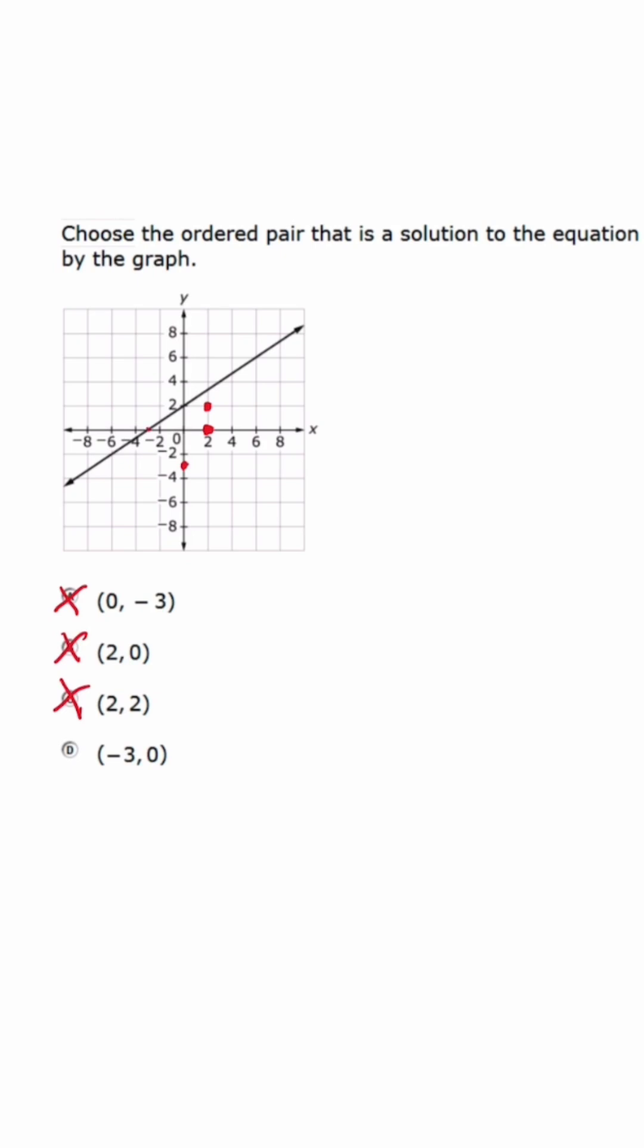But when we look at (-3, 0), that point does fall on the line.